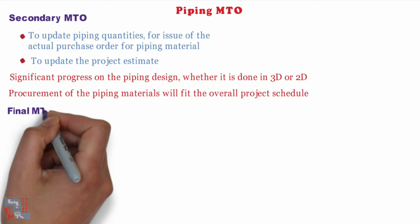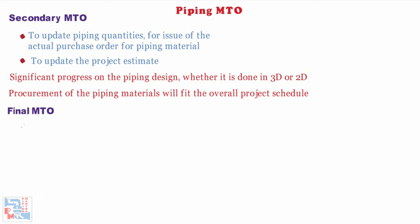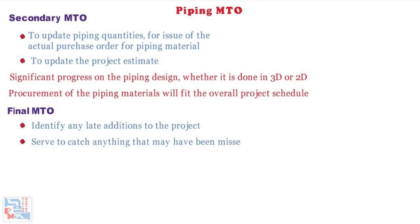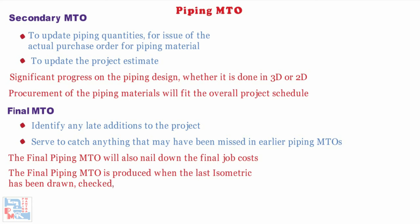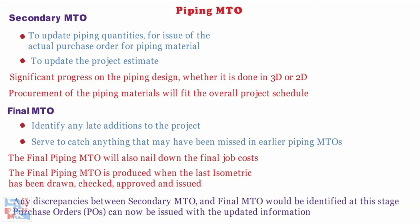Now comes final piping MTO. The final piping MTO will identify any late additions to the project and should serve to catch anything that may have been missed in earlier piping MTOs. It will also nail down the final job costs. The final piping MTO is produced when the last isometric has been drawn, checked, approved, and issued. Any discrepancies between the secondary piping MTO and the final piping MTO would be identified at this stage, and purchase orders can now be issued with the updated information.